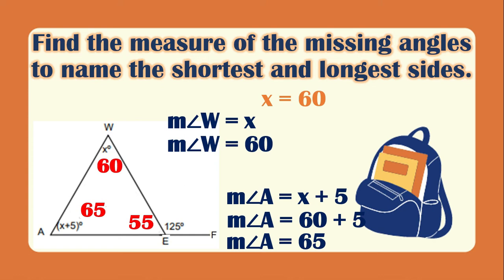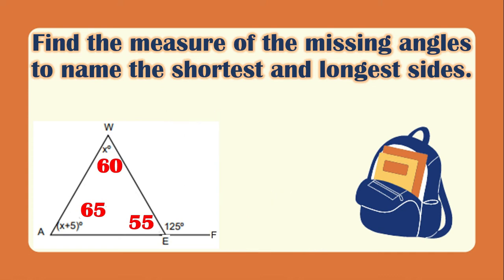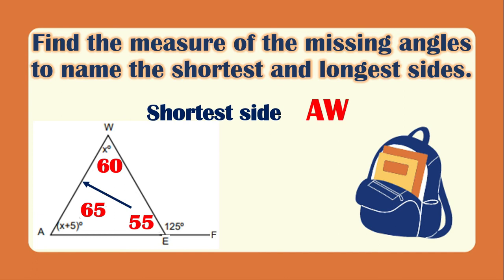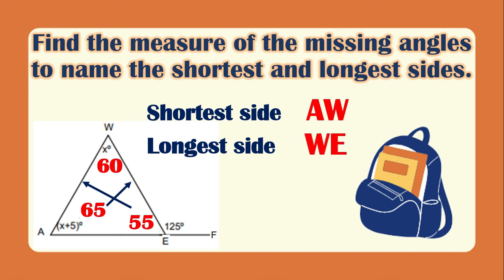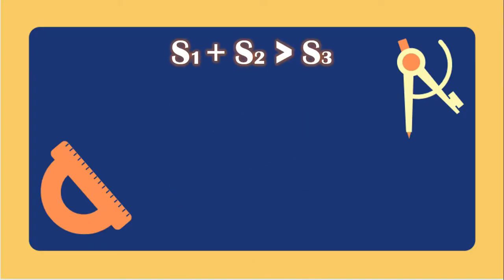Now that we have all interior angle measurements, we can name the shortest and longest sides. Our smallest angle is 55 degrees, so the shortest side is its opposite, which is side AW. The largest angle is angle A at 65 degrees, so the longest side is its opposite, which is side WE.